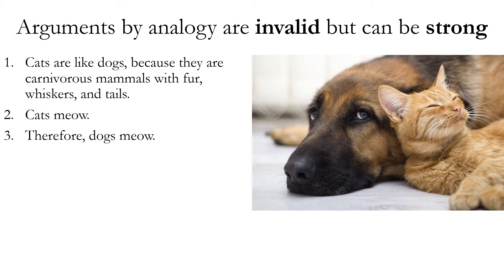Arguments by analogy are logically invalid — that means that even if the premises are true, the conclusion can still be false. For example: cats are like dogs because they are both carnivorous mammals with fur, whiskers, and tails. Cats meow. Therefore dogs meow. Both premises are true, but the conclusion is false. That shows this argument is invalid.